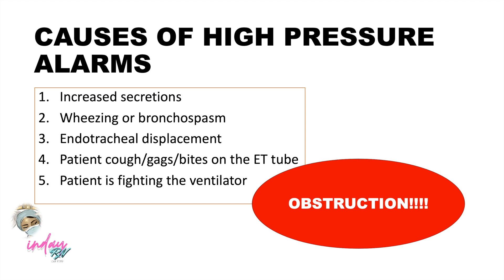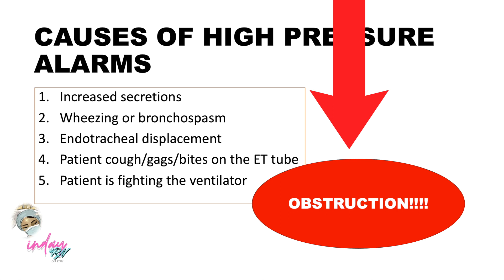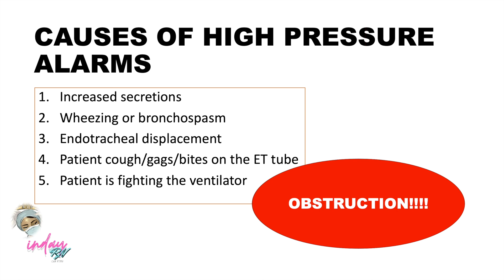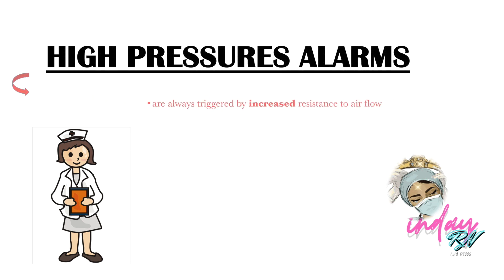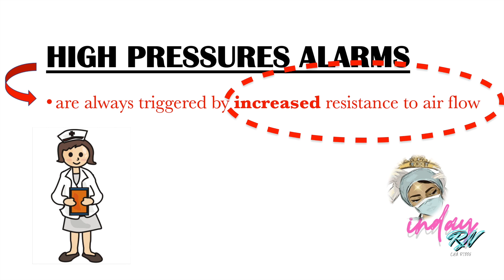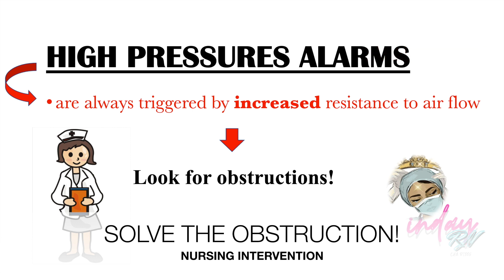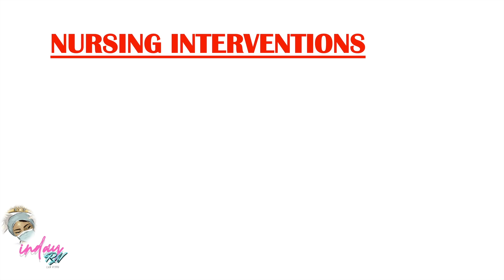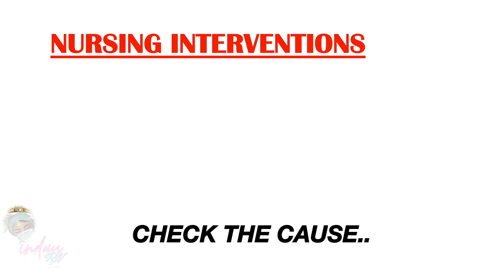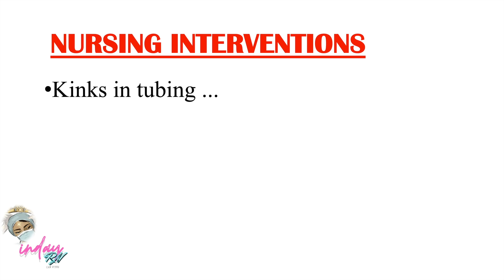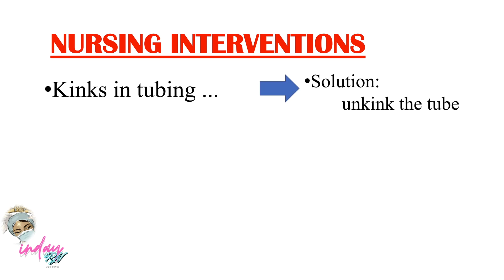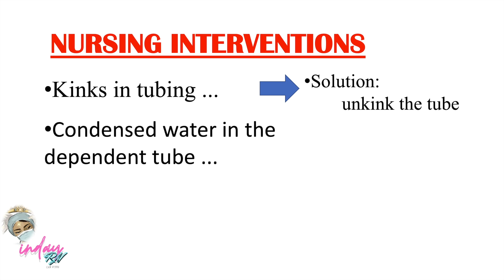In high pressure alarms, all causes result in obstruction — obstruction in the ET tube or the patient's airway. High pressure alarms are always triggered by increased resistance to airflow. Our nursing interventions: first, check the root cause of the obstruction. If there is kinked tubing, unkink the tube. If there is condensed water in the dependent tubing, remove it or empty the tube.